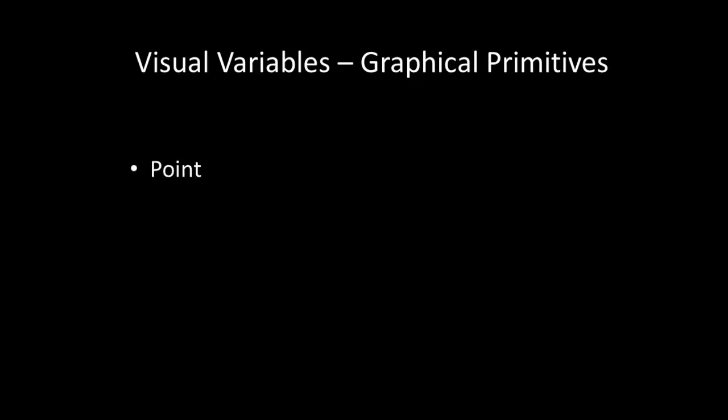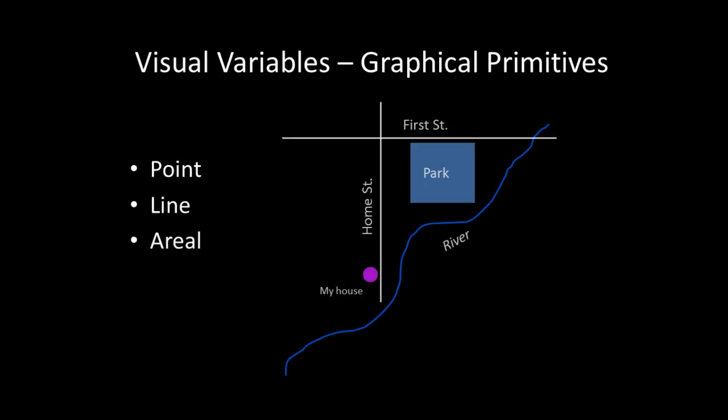Maps are generally created using three graphical building blocks: points, lines, areas, in addition to text for labeling map features. From these basic graphical building blocks, data and map feature representation is done through what are known as visual variables. Visual variables such as size, shape, orientation, color hue, and lightness are not unique to mapping and are an important overall graphical design device. In a mapping context, they are essential to understand for properly matching the correct visual variable with the form of data measurement being mapped.